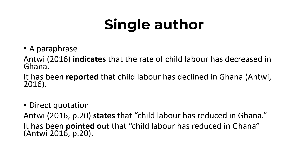You can also use the parenthetical reference where you have: 'It has been reported that child labor has declined in Ghana,' then in brackets, Entry, comma, 2016. Now, it can also be a direct quotation. If it is a direct quotation, then you have to provide the page number. So for example, Entry 2016, comma, page 20 states that 'child labor has reduced in Ghana.' The exact words of Entry are in quotation marks.